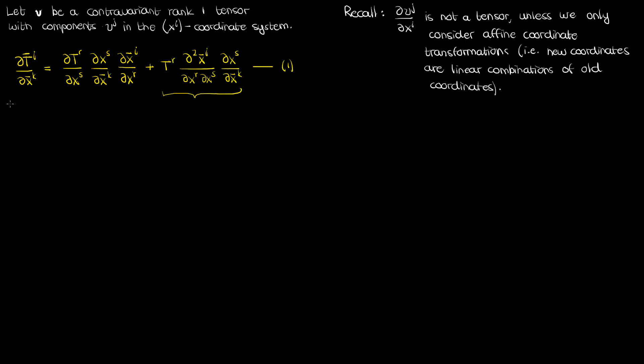I'm going to call this equation 1. The derivative of a tensor doesn't transform like a tensor in most cases, so it might seem hopeless — but there is a workaround. The workaround involves taking a different type of derivative: not the simple derivative, but the covariant derivative of a tensor. The covariant derivative of a tensor will ultimately transform like a tensor, and I'll show you how in this video on covariant differentiation.